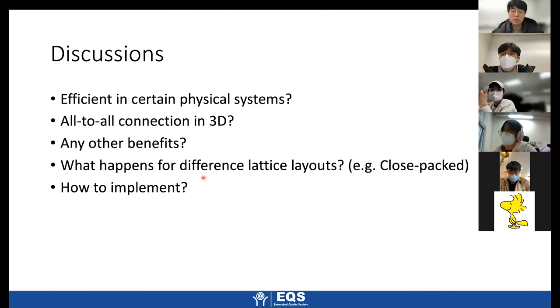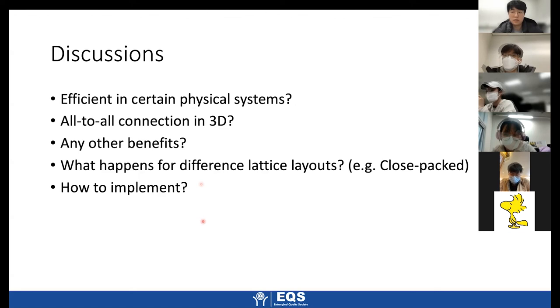And let's move on to the next discussion. Up to now, we consider a square lattice or cubic lattice. But how about what would happen if we consider a different kind of lattice, such as close-packed structure? The number of neighboring qubits would be increased. So how would that affect the result? Any other questions or other opinions? Okay, if you guys don't have any more questions, let's end this meeting.